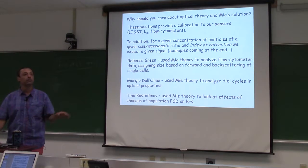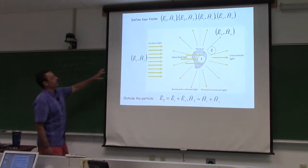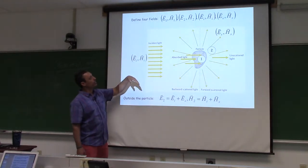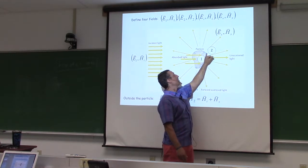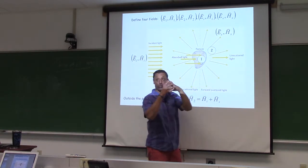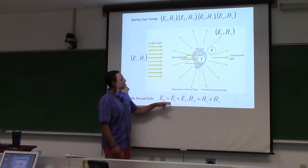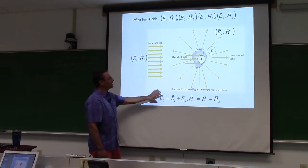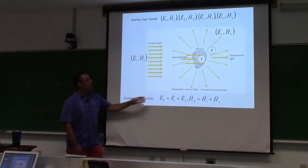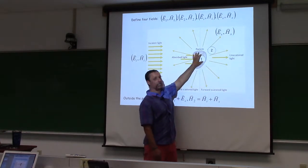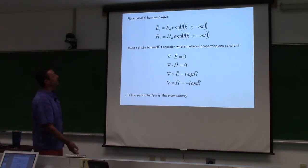Rebecca Green used Mie theory to analyze flow cytometer data, assigning size based on forward and backscattering of single cells. Giorgio Dalomo used Mie theory to analyze the cycle in optical properties, and Tio Konstantinov used Mie theory to look at the effect of changes in population PSD on remote sensing reflectance. Those are all Mie theory calculations. The idea: you have an incident electric and magnetic field coming to your particle. The solution involves an internal field and an external field, resulting in boundary conditions on the boundary of your particle.